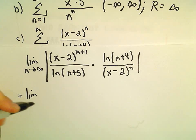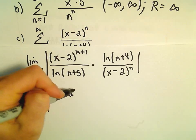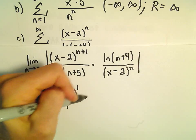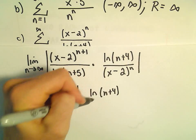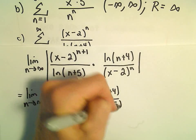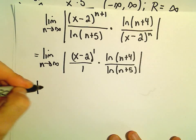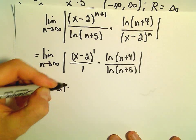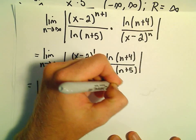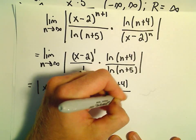So here we'll have the limit as n goes to infinity. We'll be left with an x minus 2 to the first in the numerator when we subtract our exponents. And then we've got the natural logarithm of n plus 4 over the natural logarithm of n plus 5. So we can pull our absolute value of x minus 2 out front and have the limit as n goes to infinity of natural logarithm of n plus 4 over the natural logarithm of n plus 5.